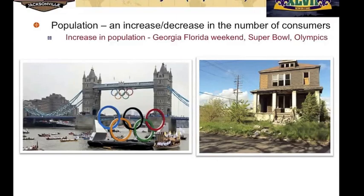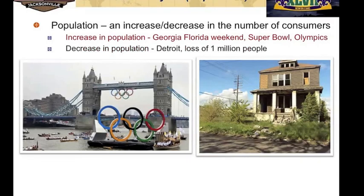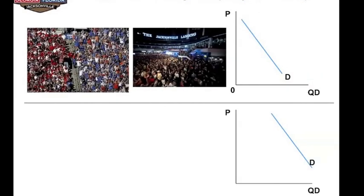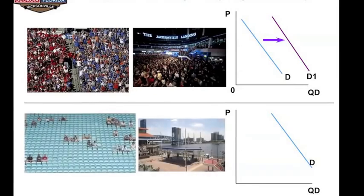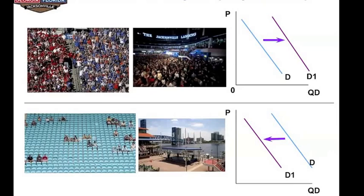Let's look at this again as an increase or decrease in population. During Georgia-Florida weekend, the Super Bowl, or the Olympics, there's going to be an increase in population, so many things sold at those time periods will see an increase in demand. Detroit has lost a lot of people and will see a decrease in demand for many products. On the graph, here we have the Jacksonville Landing where many people go after the game — products in this area will see an increase in demand. After everyone has left, the area returns to normal and they'll see a decrease in demand.